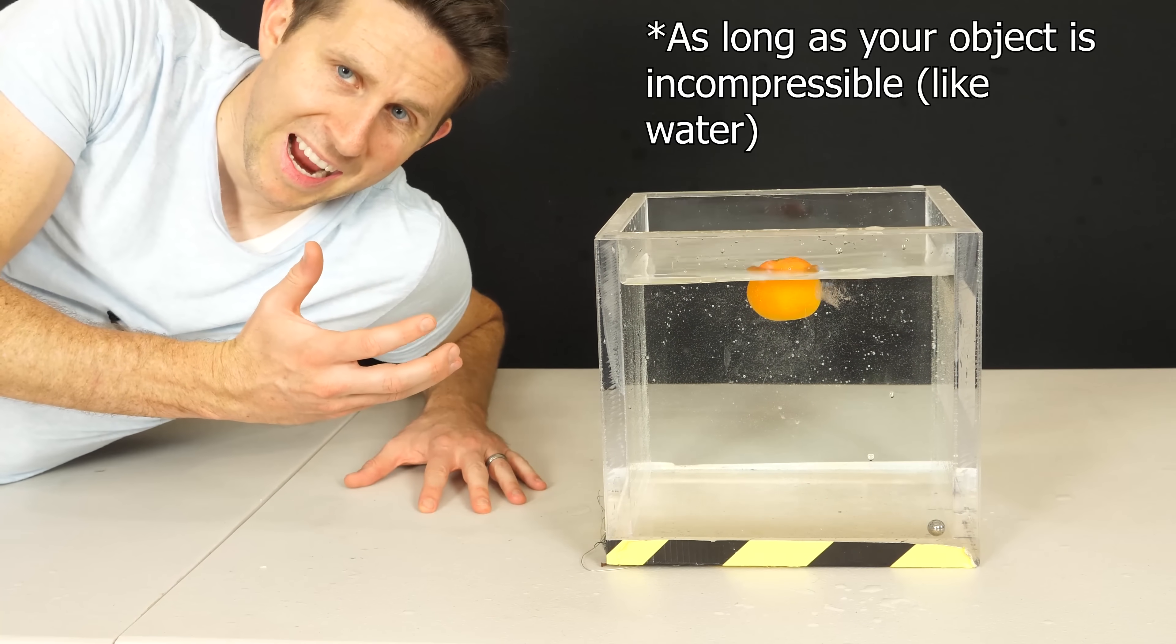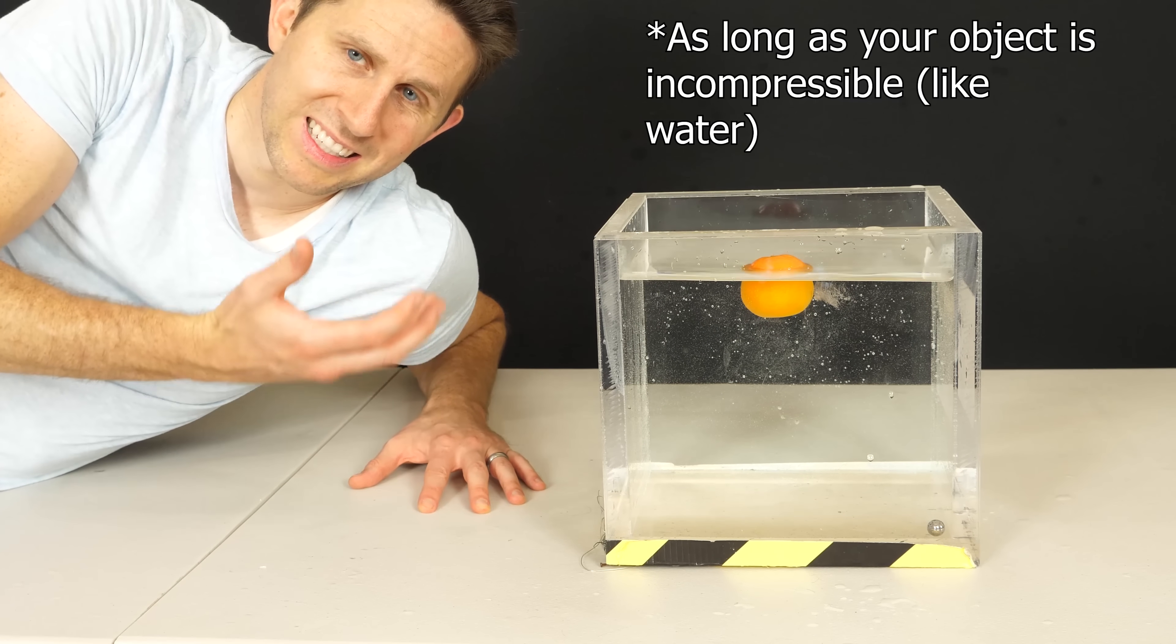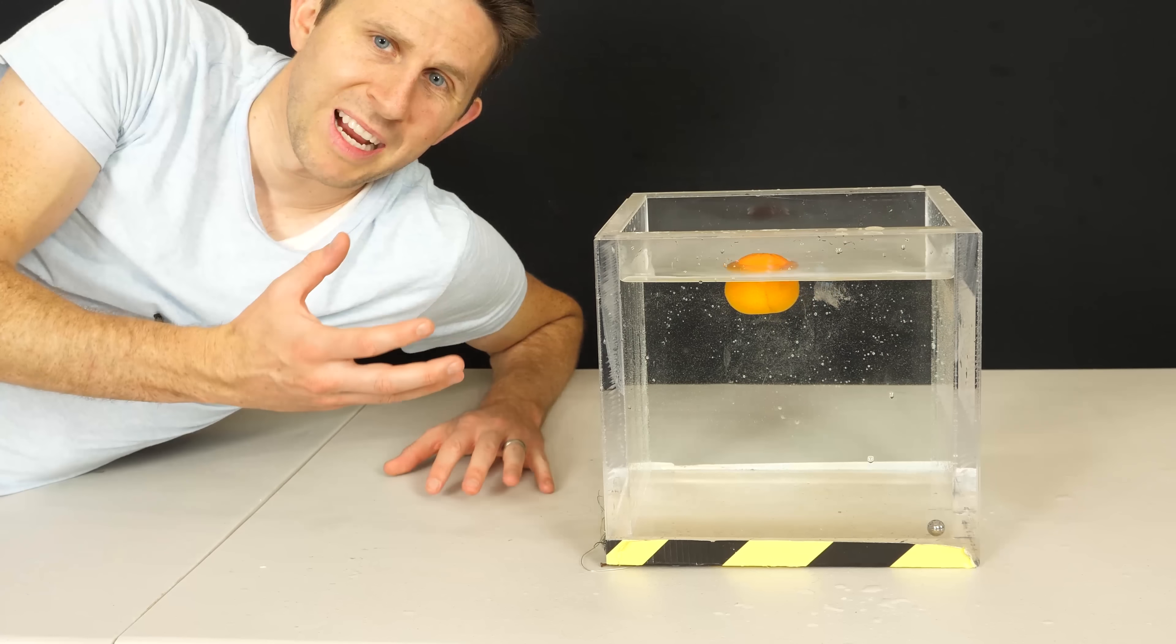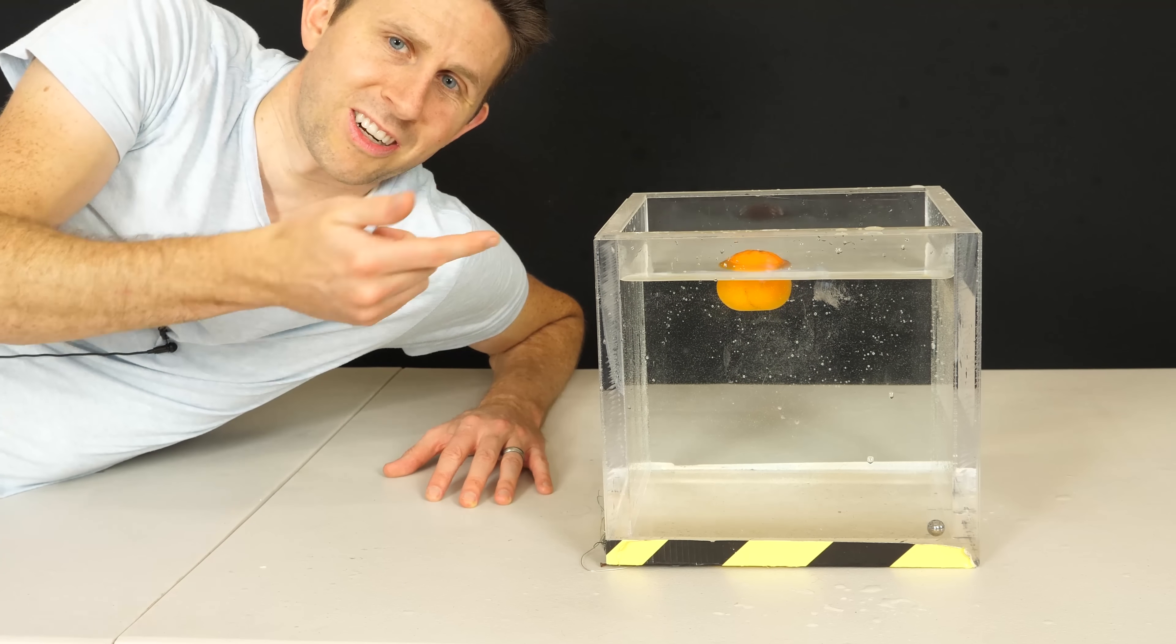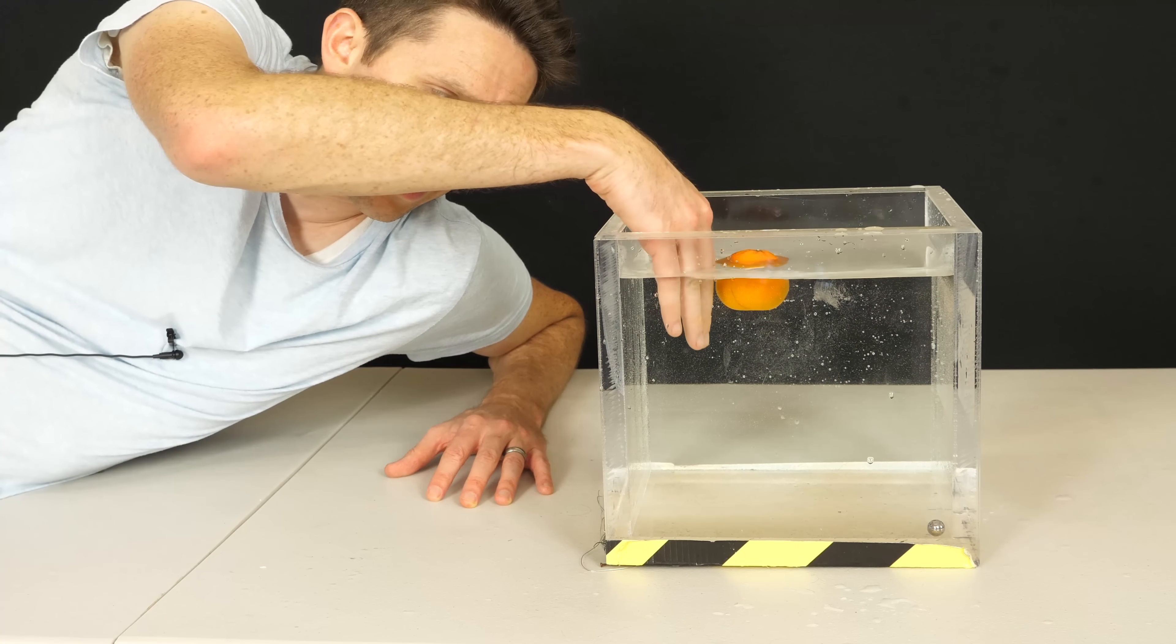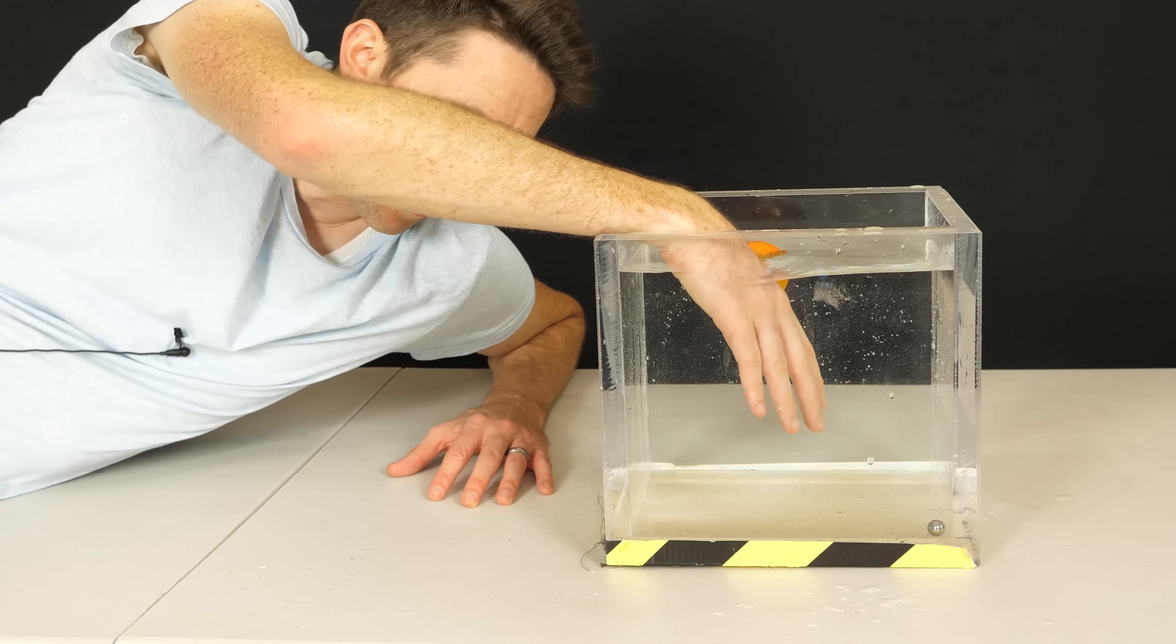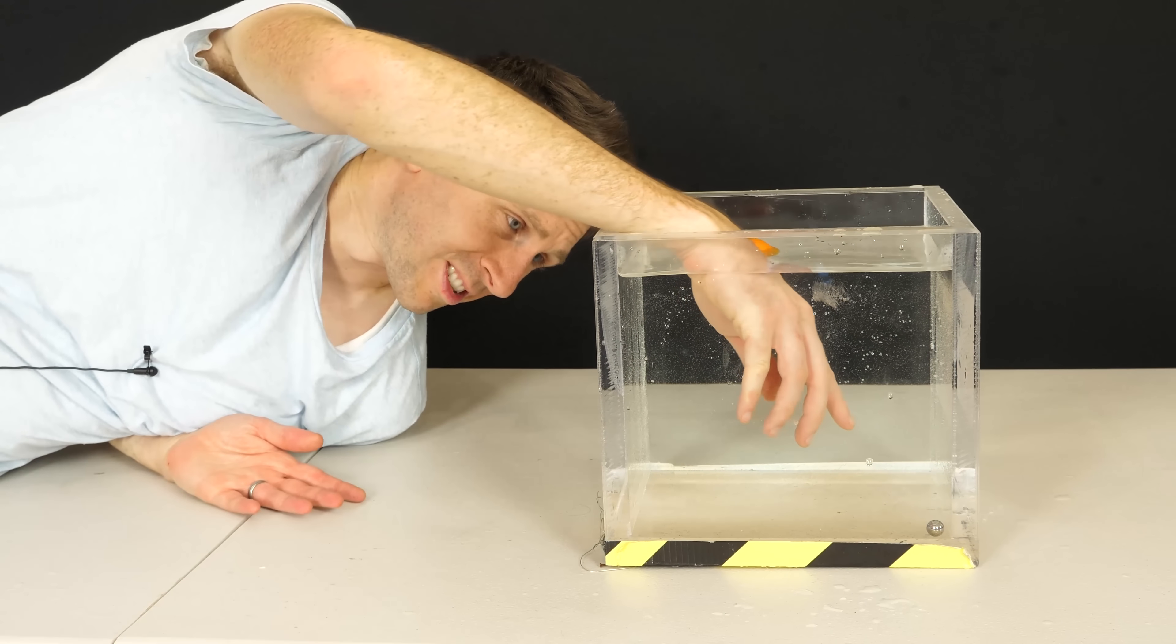So that means my hand should be okay because my hand is less dense than water. So my hand will never get pulled towards the neutron star stronger than water. So as long as I keep it in water, I should be able to get as close to it as I can.